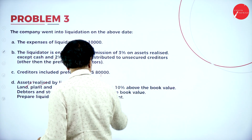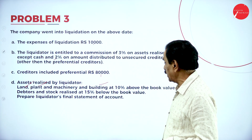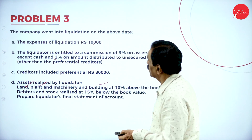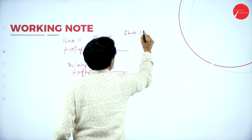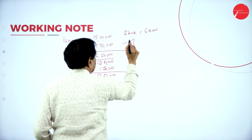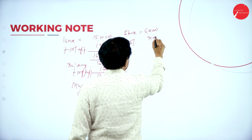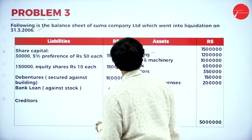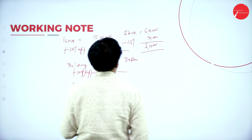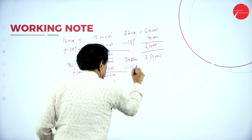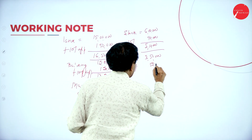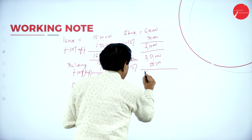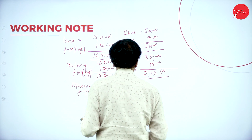Stock book value is 6 lakh, minus 15% below book value of 90,000, giving realized value of 5,10,000. Debtors book value is 3,50,000, minus 15% of 52,500, giving realized value of 2,97,500.